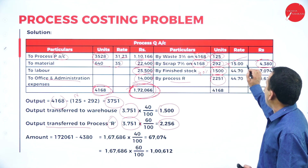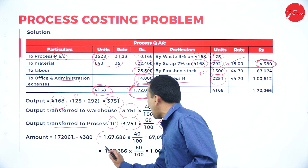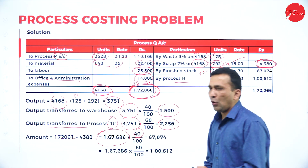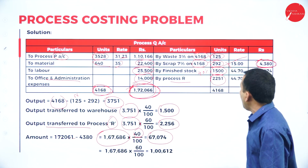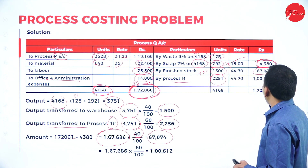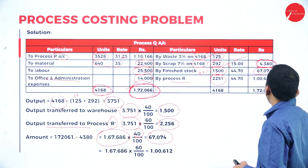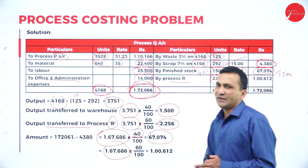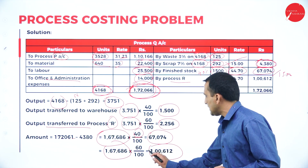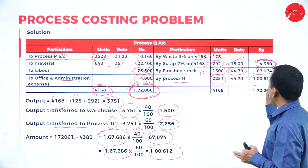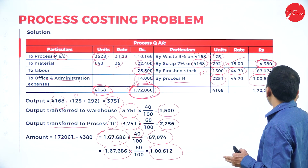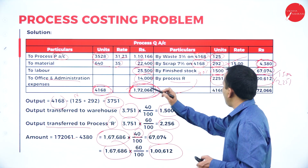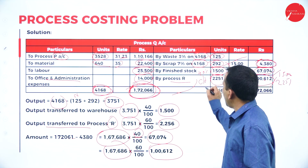Taking 40 percent of ₹1,67,686 = ₹67,074 going to finished stock. The rate: ₹67,074 ÷ 1,500 = ₹44.70 per ton. For the transfer to Process R: 60 percent of ₹1,67,686 = ₹1,00,612. The rate: ₹1,00,612 ÷ 2,251 = ₹44.71 per ton. This is carried forward to Process R.